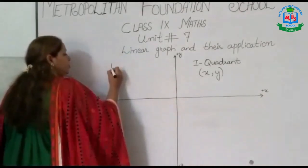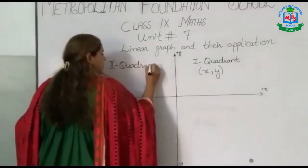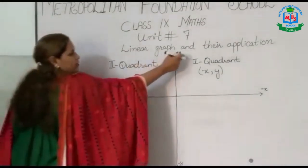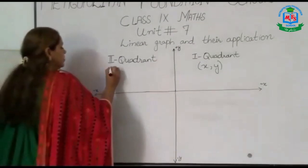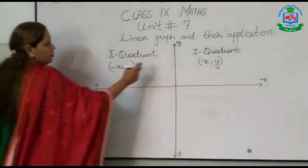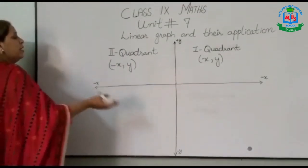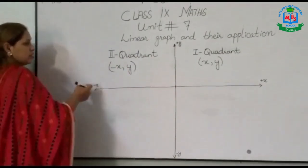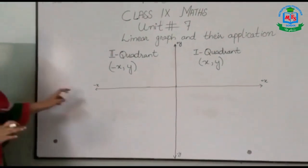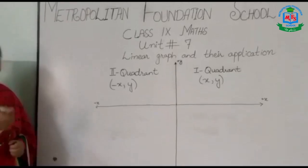After that we have the second corner of the graph. In the second quadrant, x value is negative and y value is positive. When we plot the graph, we will be able to find the graph values, but only if we know where x is positive and where x is negative.